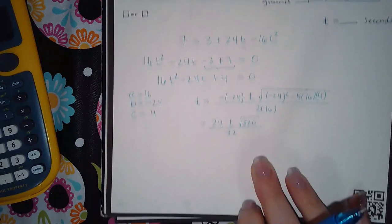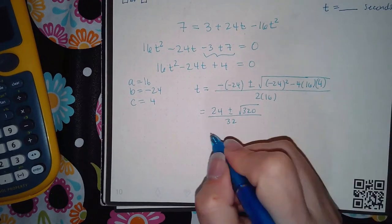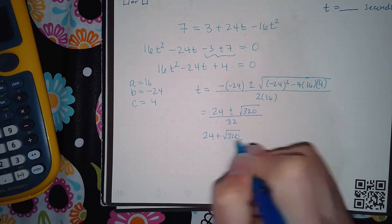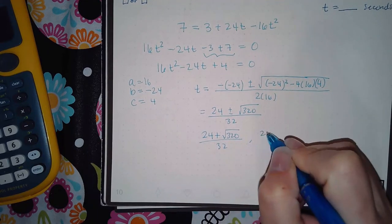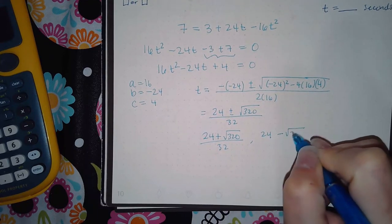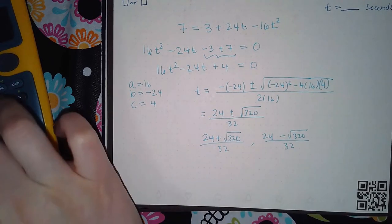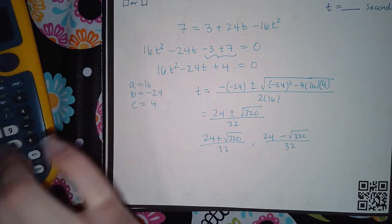So I don't have to keep simplifying this. I can get the two answers: we have 24 plus the square root of 320 over 32, and then 24 minus the square root of 320 over 32. So let's go ahead and type that in the calculator.